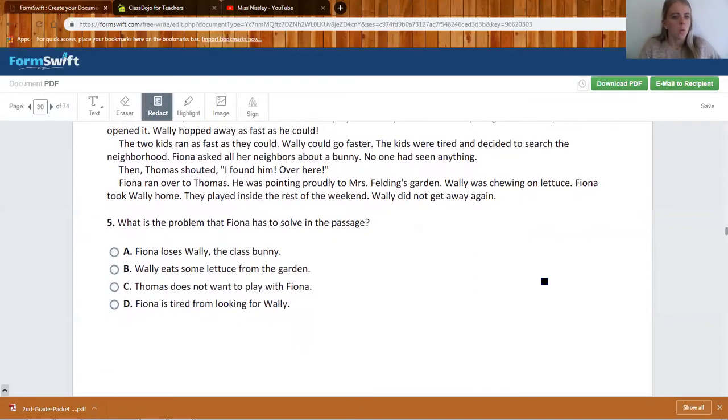Number five. What is the problem that Fiona has to solve in the passage? Well, if you were following along, you would know A. Fiona loses Wally, the class bunny.